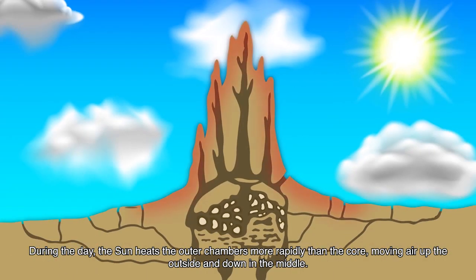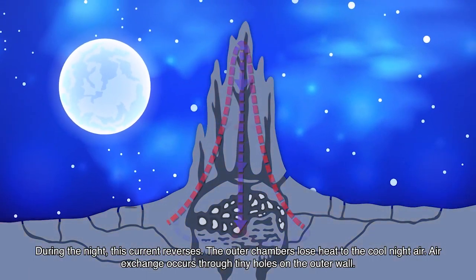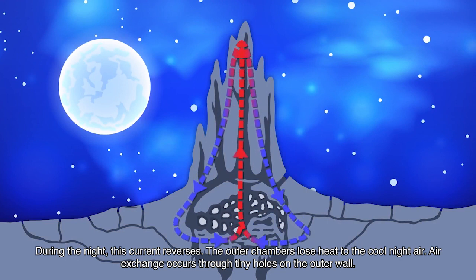During the day, the sun hits the outer chambers more rapidly than the core, moving air up the outside and down in the middle. During the night, this current reverses. The outer chambers lose heat to the cool night air. Air exchange occurs through tiny holes on the outer walls.